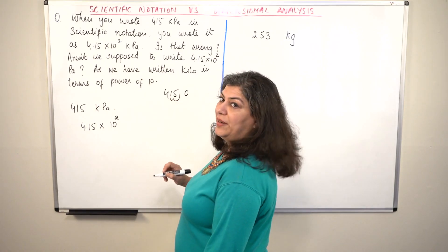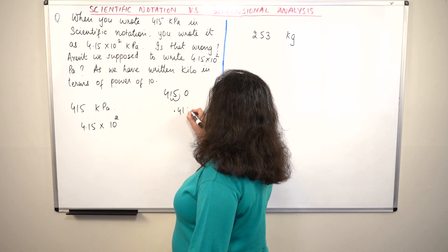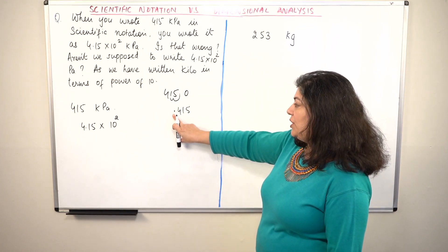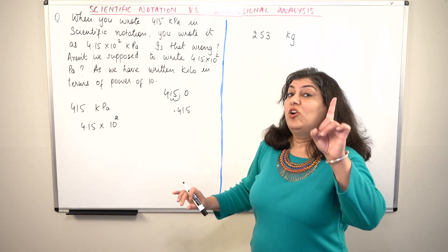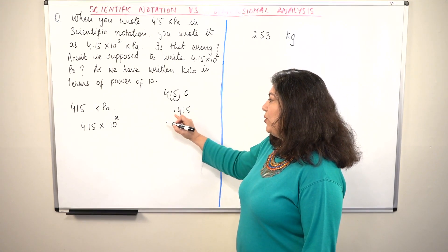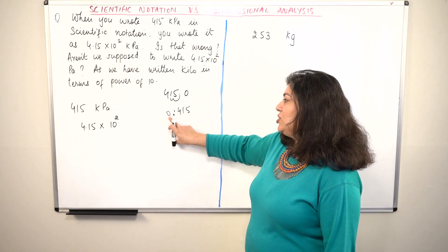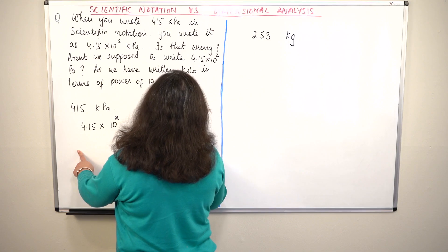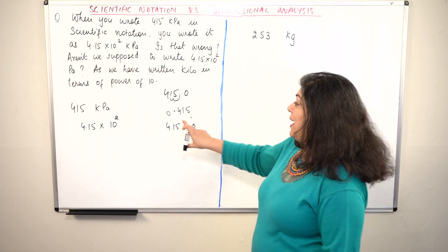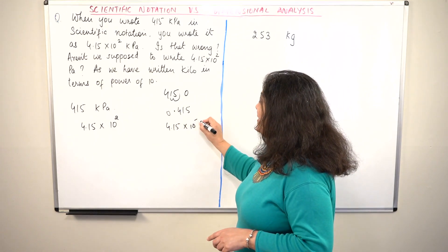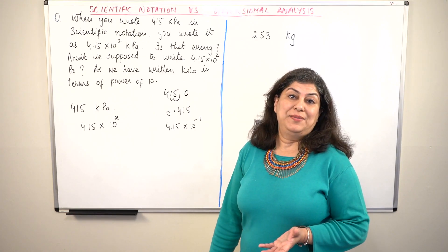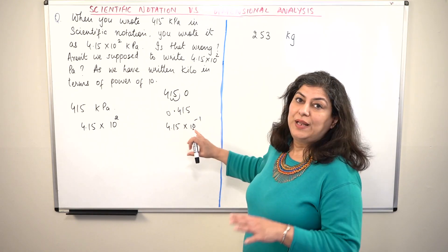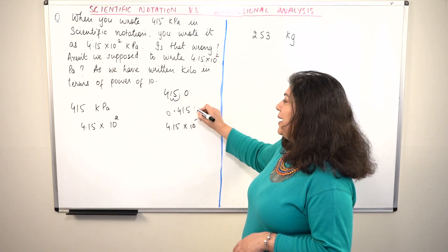Let us assume my number was not 415 but 0.415, and I want to write it in scientific notation. There should be one non-zero digit before the decimal. So I shift the decimal in this direction and write 4.15, then multiply by 10 to the power of minus 1. Why? Because actually I'm dividing it by 10. Anything to the power of minus 1 means it is being divided by that value. So it has to be divided by 10 in order to come back to the same value.